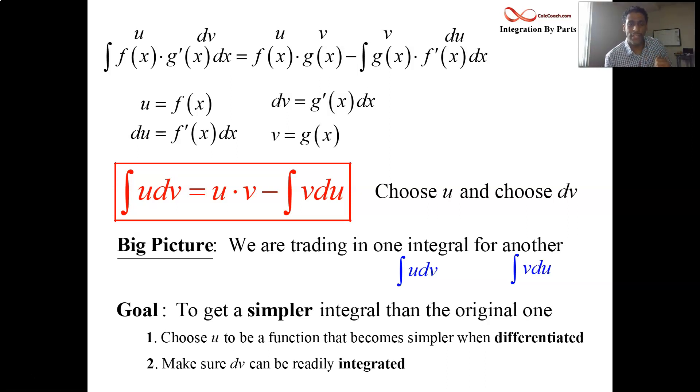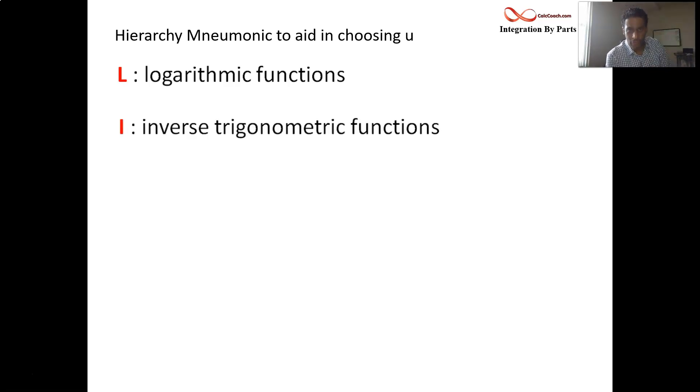One more thing that I have for you is a mnemonic. It's a hierarchy that helps you figure out what u should be based on types of functions. If you're trying to integrate using the technique of integration by parts and you see a logarithmic function, natural log, log base 10, whatever you want, log function, you should let u be equal to that log function. In the absence of a log function, if you see an inverse trig function, you should let u be equal to that inverse trig function. In the absence of a log function, if there is no inverse trig function, if you see an algebraic function, you should let u be equal to that algebraic function.